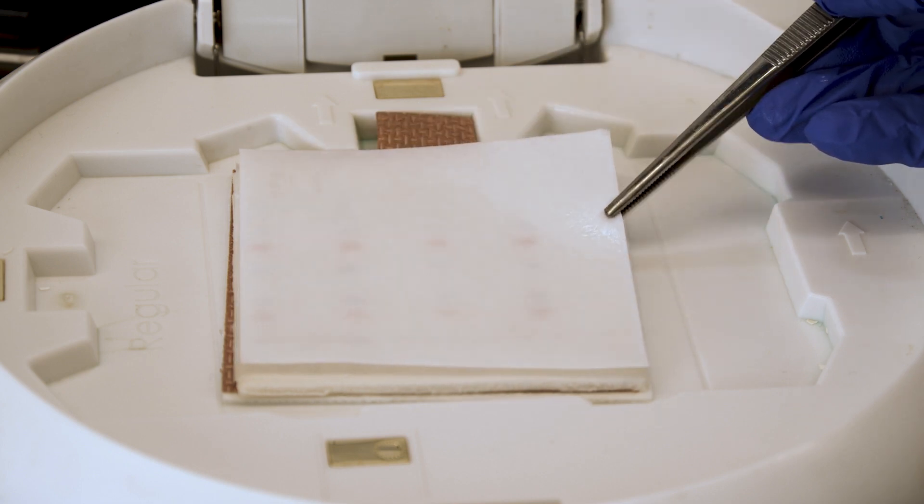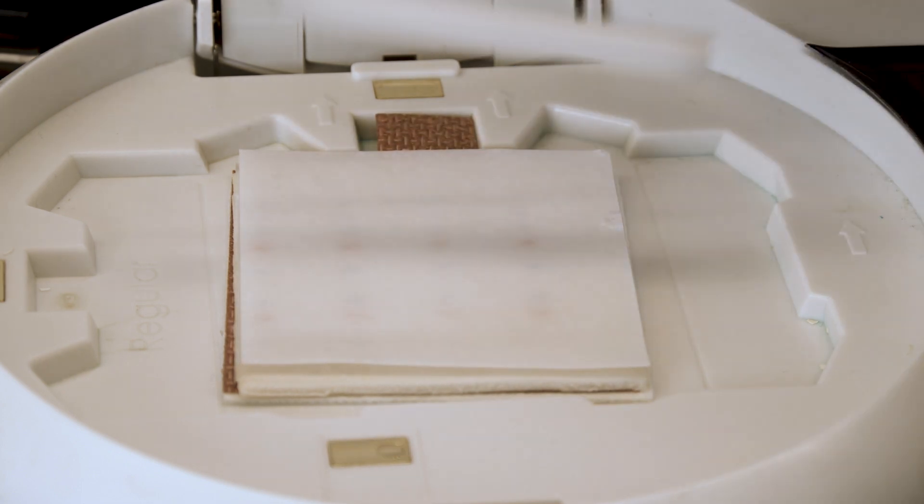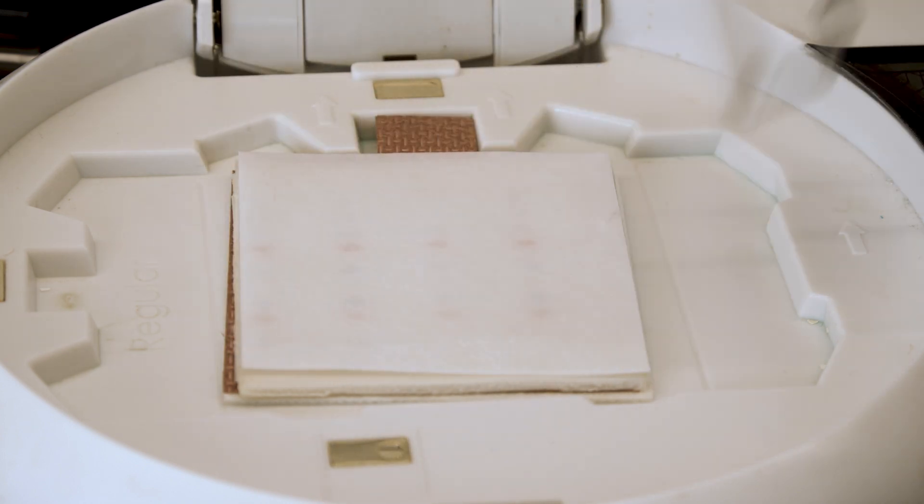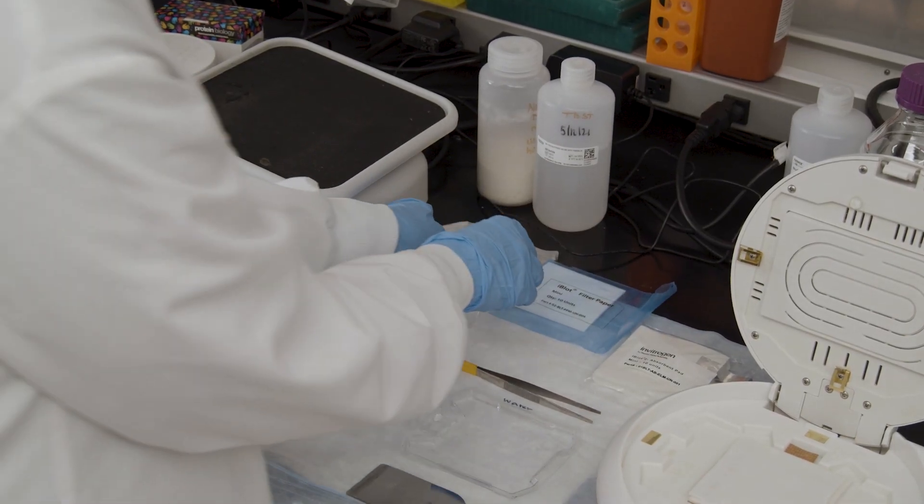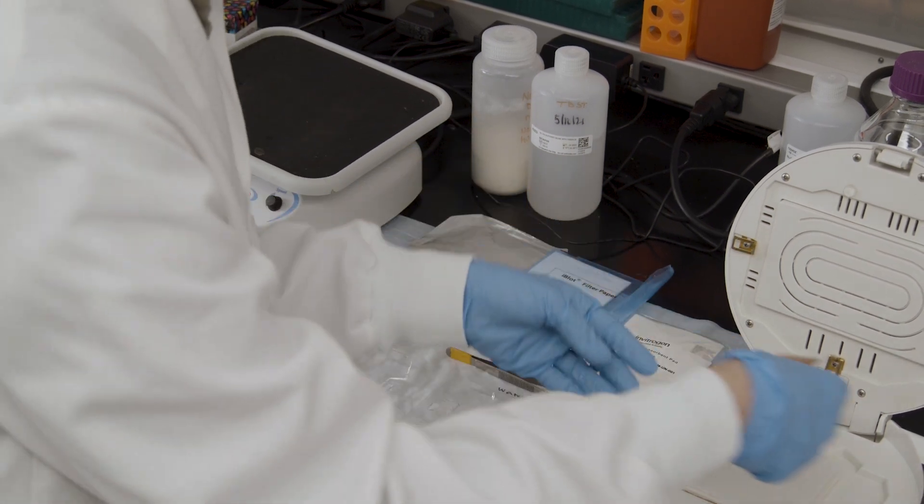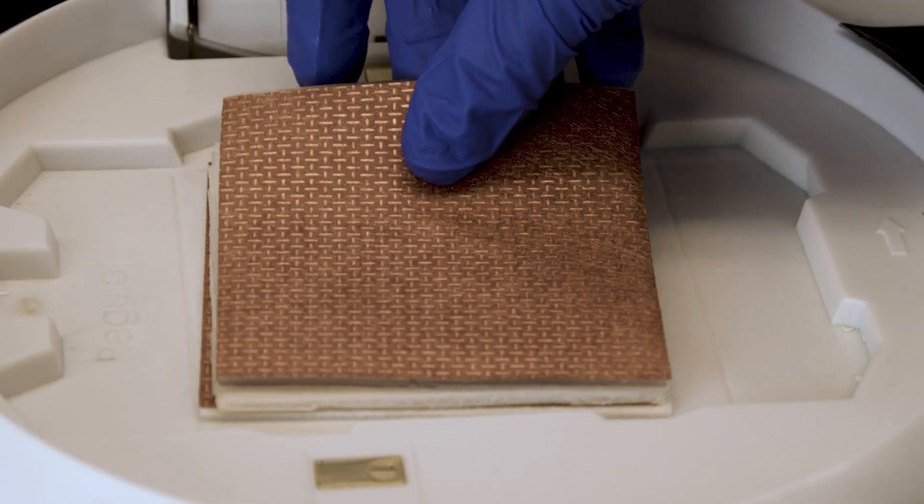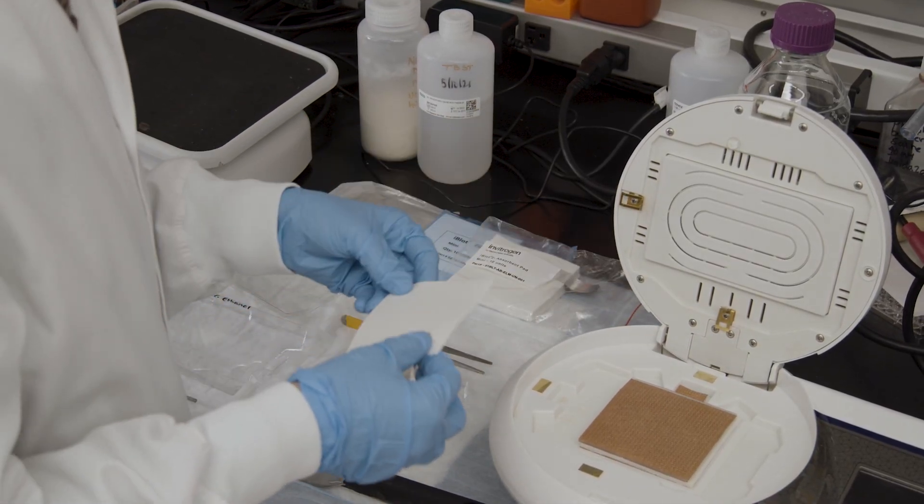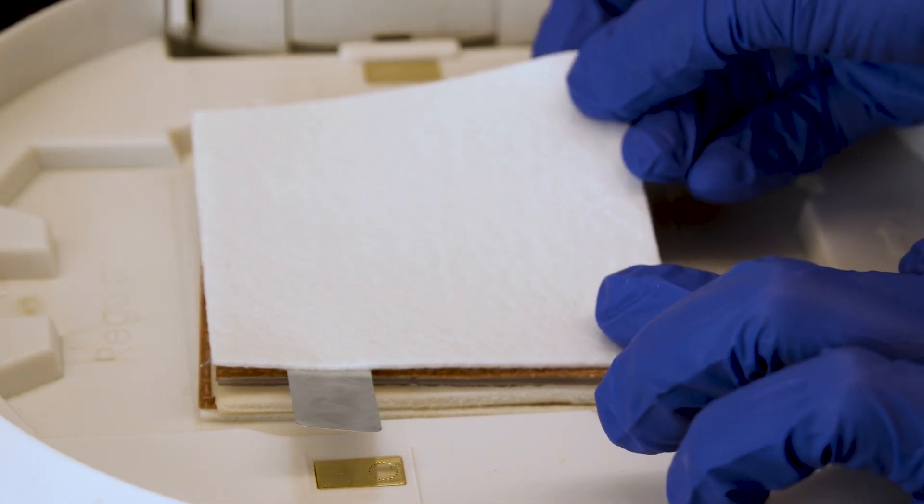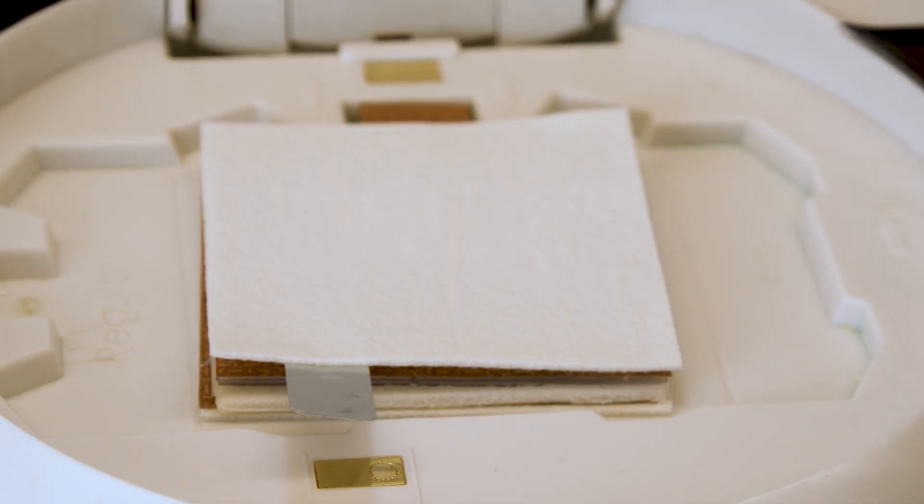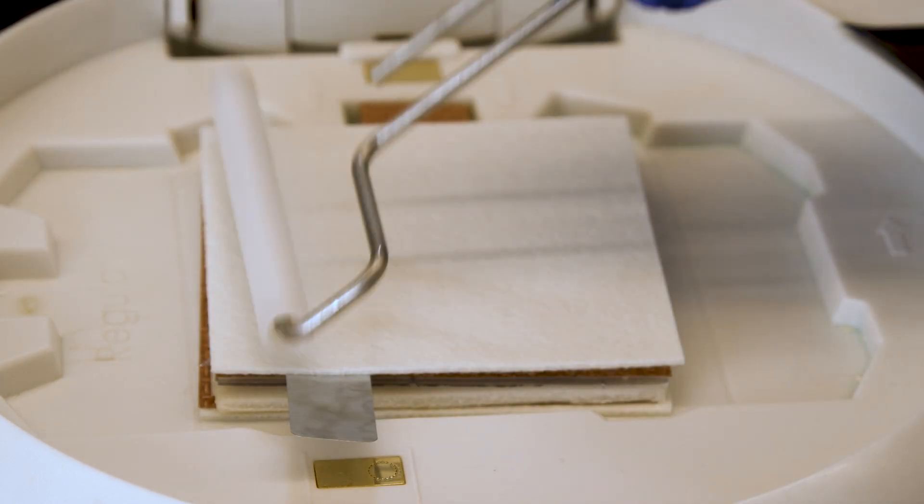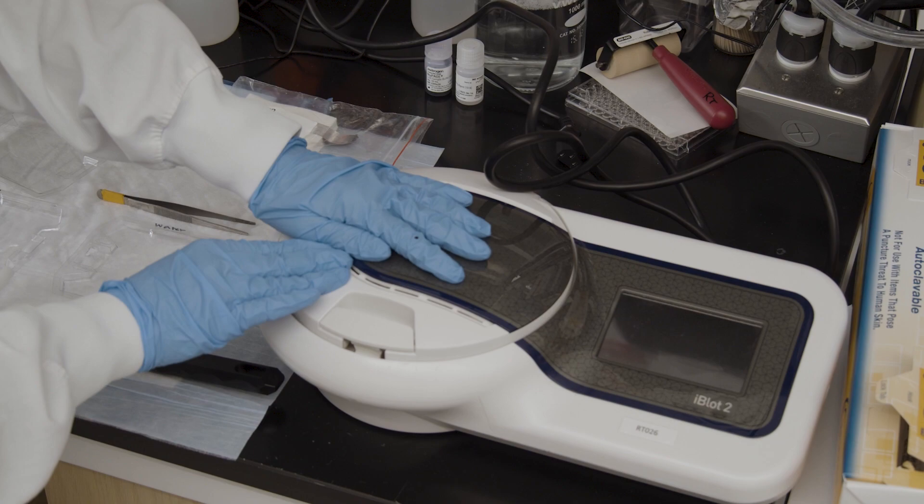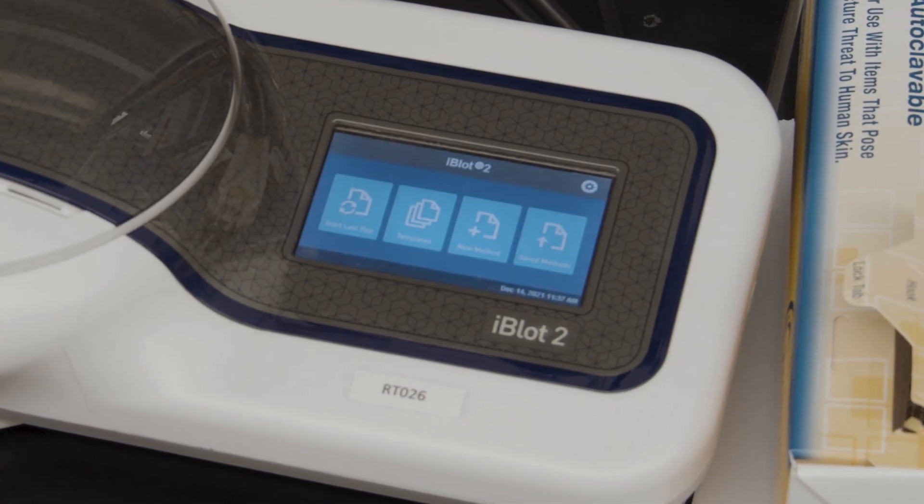Place the top stack consisting of the cathode stack, copper cathode, and an absorbent pad on the filter paper. Use a roller to gently remove any air bubbles. Cover the transfer apparatus and select and run the desired program.